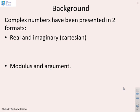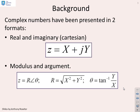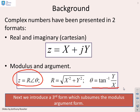We've used complex numbers in two forms: real and imaginary, or Cartesian, so we've written things like z equals x plus jy. Or we've used modulus argument forms, so we've said things like z can be represented as r arg theta, where r is the modulus and theta is the argument. In this video we're going to introduce a third form which subsumes the modulus argument form, by which we mean you can actually do away with this form in the future and use the third form because they are equivalent.